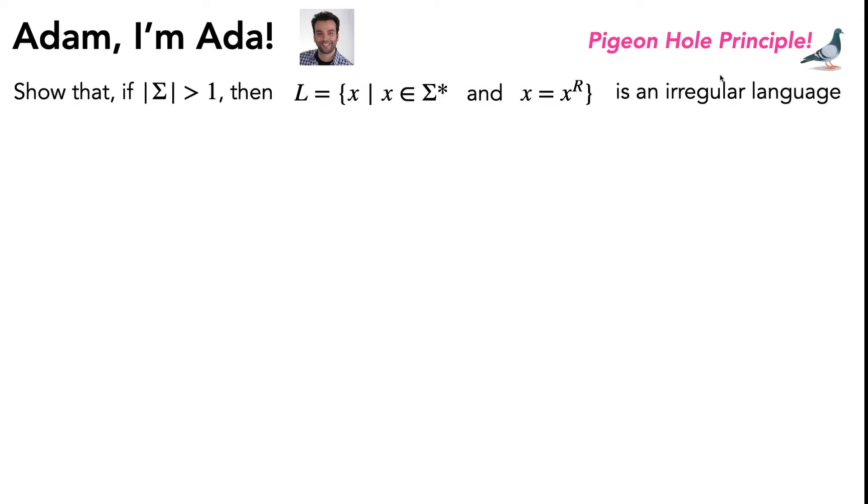Before we get started on this particular problem, it's a good idea to just go over how the whole pigeonhole principle proof for showing that a language is irregular works. So these proofs are contradiction proofs, and since we want to show that a language is irregular, we are going to assume for the sake of contradiction that the language is a regular language.